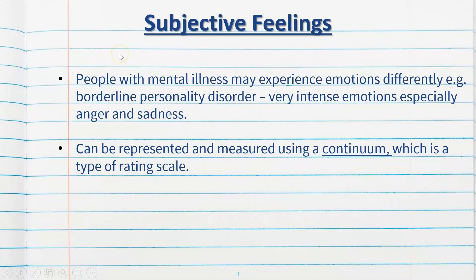People with mental illnesses may experience emotions differently. People who have been diagnosed with borderline personality disorder often have very, very intense emotions, especially anger and sadness — so much more intense than would be typical with people that do not have borderline personality disorder.